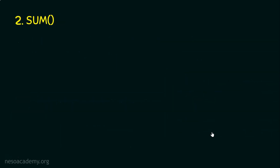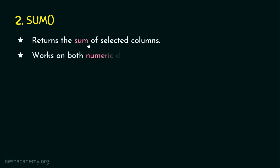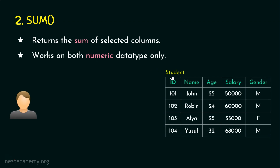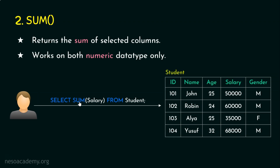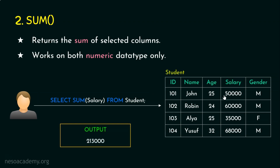Let's move on to the second aggregate function, SUM. The name itself says it's going to sum the entire column — it returns the sum of the selected column. This SUM function works only on numeric data types. Let's take the same student table. If the user wants the summation of a specified column, the query is: SELECT SUM(salary) FROM student. The SUM function takes the column name as a parameter. There may be multiple values in the salary column, and the user wants the summation of the entire salary column. The result will be 2,13,000.